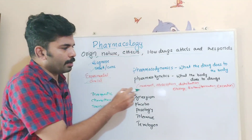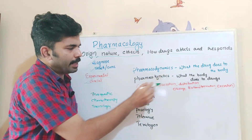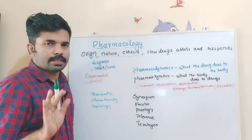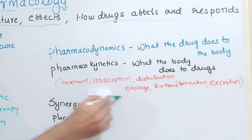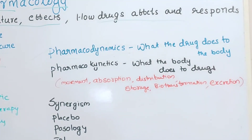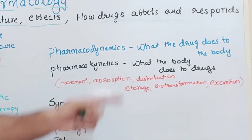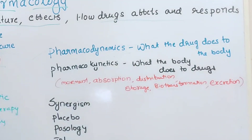Pharmacokinetics has four components: Absorption, Distribution, Metabolism, and Excretion.